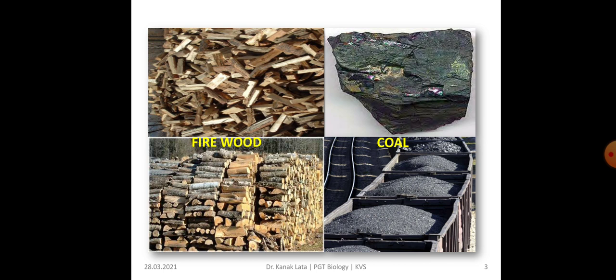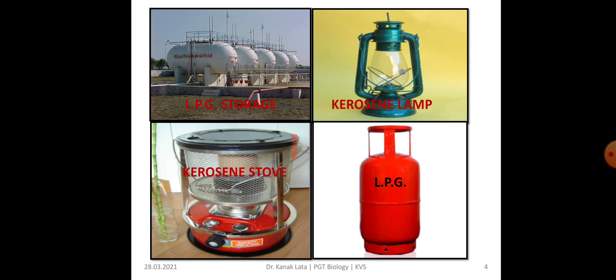Here you can see the figure showing some combustible substances — fire, wood, and coal. Here also you can see LPG stores, kerosene, and a kerosene stove. Kerosene is the combustible substance used in the kerosene stove, and LPG is also a combustible substance which is stored in this cylinder.